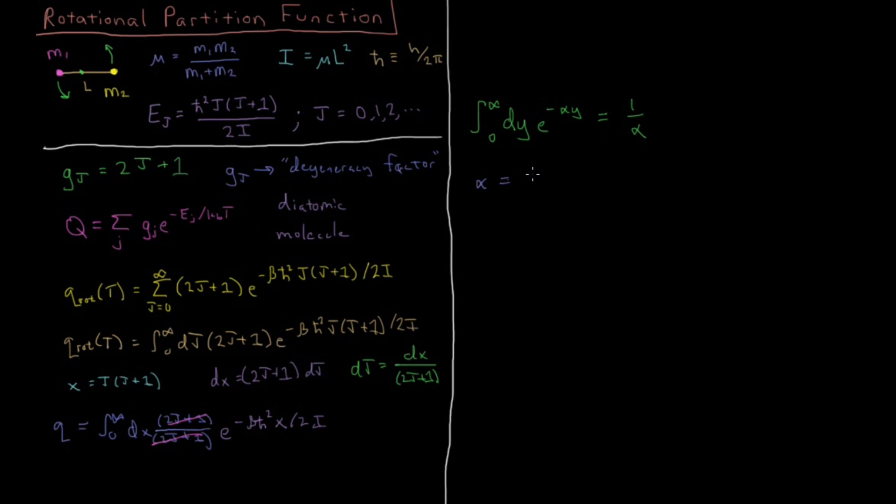Writing that down, we have our alpha equals beta h-bar squared over 2i. So 1 over alpha, or the result of our integral q, is going to be 2i over beta h-bar squared.